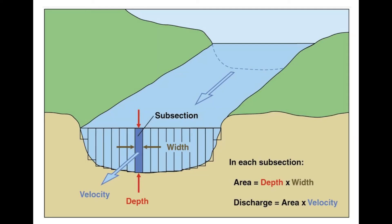To calculate discharge, it's actually fairly simple. First, you just have to get the area of the river. You get that by measuring the distance across and then measuring the depth at a defined interval — a lot of people go every meter or every yard. Depending on river size, measurements can be less frequent. Then you take the average depth and multiply it by the width to get your cross-sectional area.